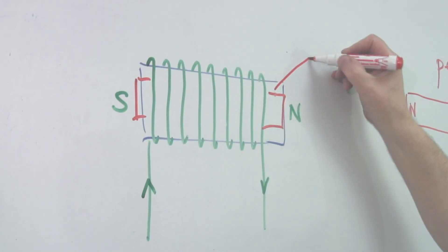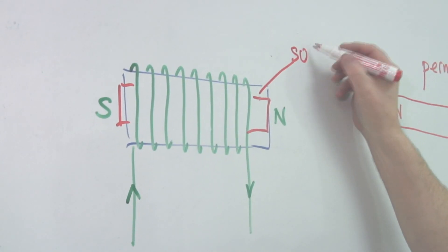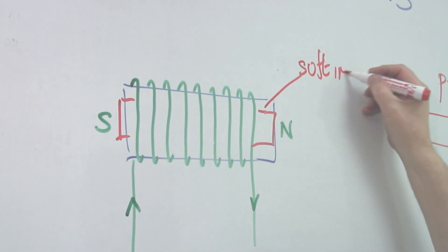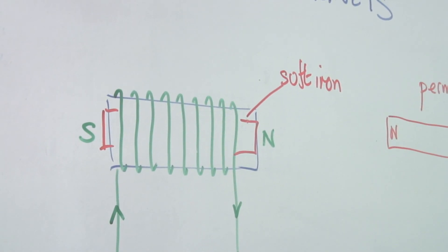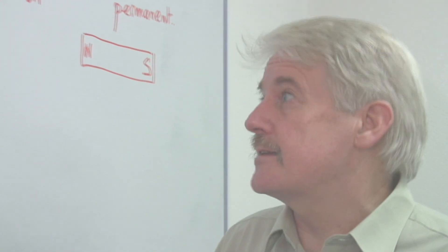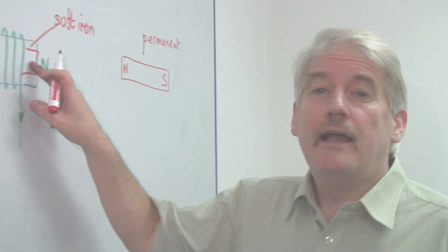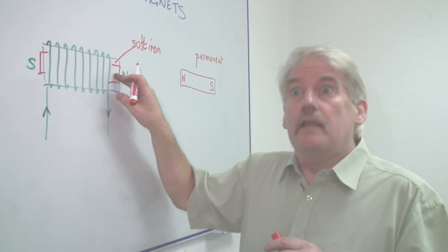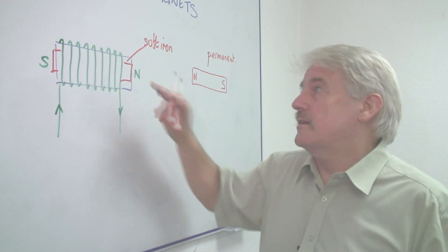So down the centre of the coil, I put a soft iron core. Soft doesn't actually mean it's soft. It means it's easy to magnetise. So this core will magnetise easily and equally easily demagnetise.